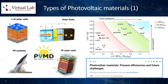Crystalline silicon is known for its high efficiency and longevity, but it is relatively expensive to produce. Two: thin film solar cells. These are made of materials such as amorphous silicon (a-Si), copper indium gallium selenide (CIGS), or cadmium telluride (CdTe). Thin film technologies typically have lower efficiencies than crystalline silicon, but they can be cheaper and more flexible, which opens up new applications.